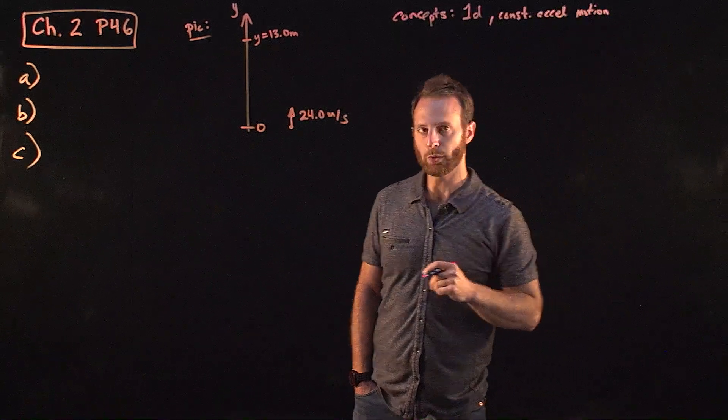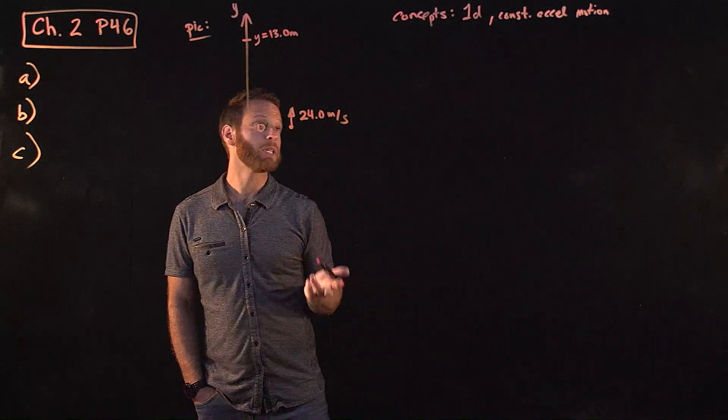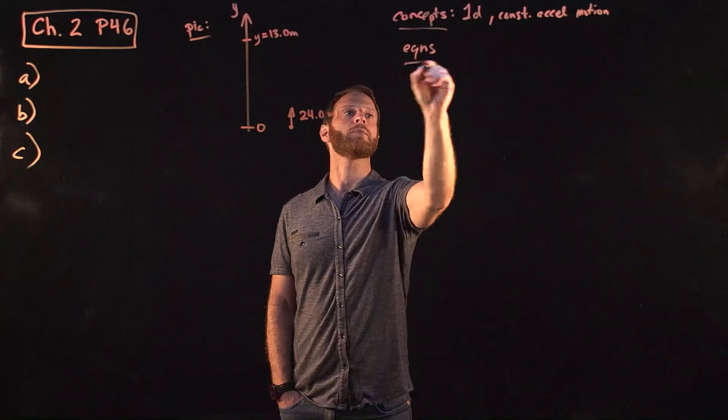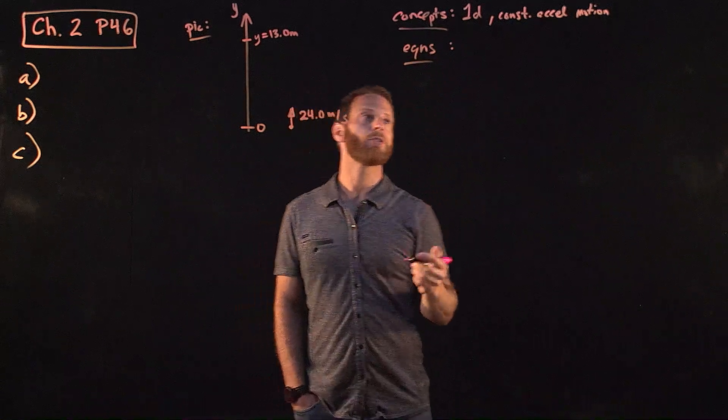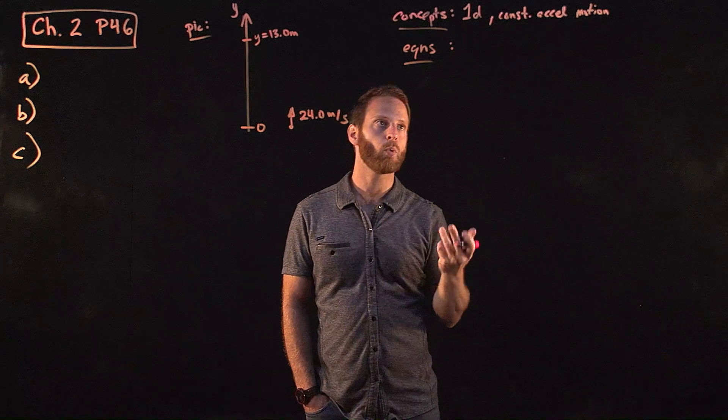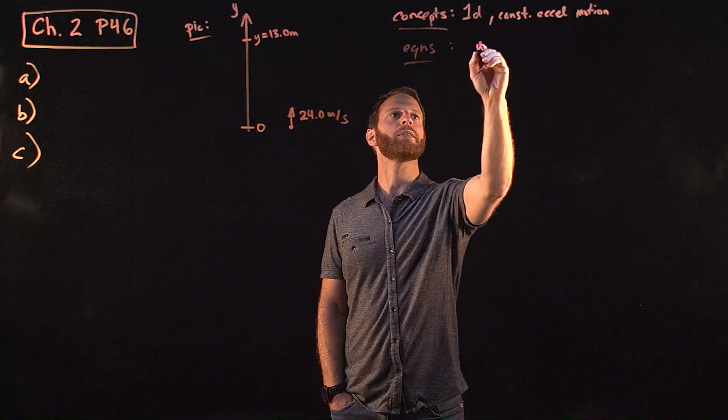Conceptually, we've got one-dimensional motion with constant acceleration. So let's just write 1D constant acceleration motion, right? That acceleration due to gravity. And we might as well list some equations that we might need. We've got concepts, equations, and there are these three master equations that we use. We can write them down in terms of the x or y direction. They're all the same. So let's write them in terms of y.